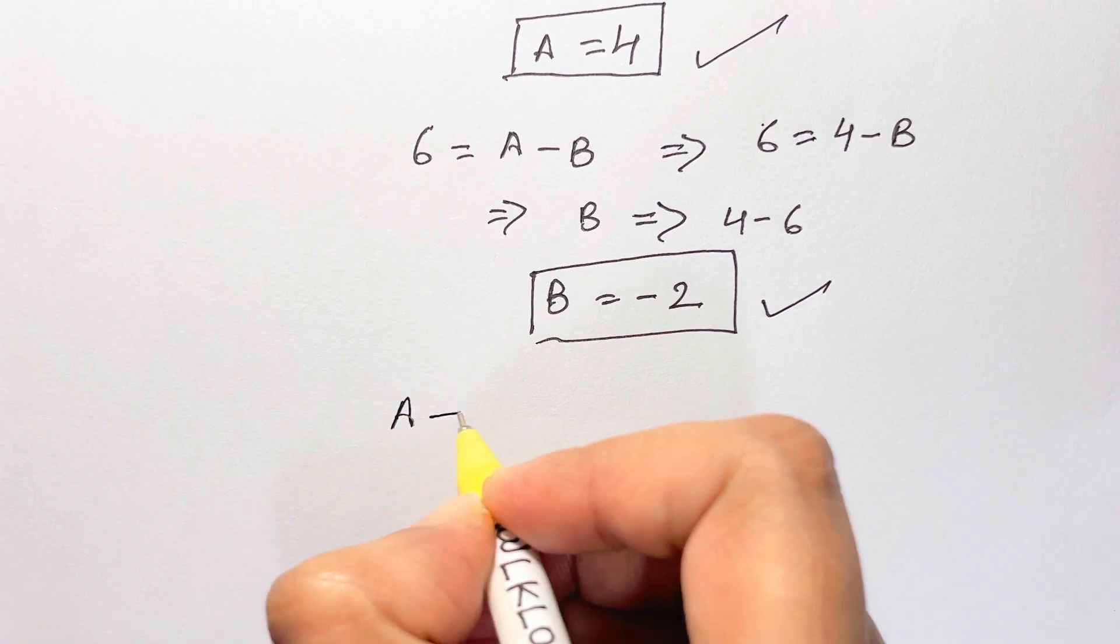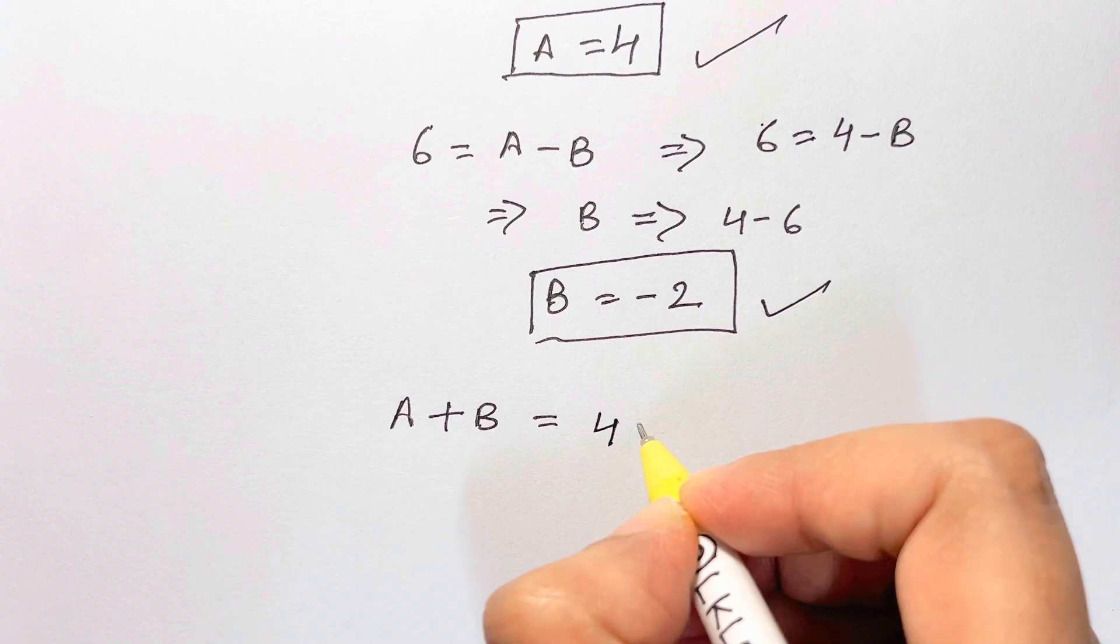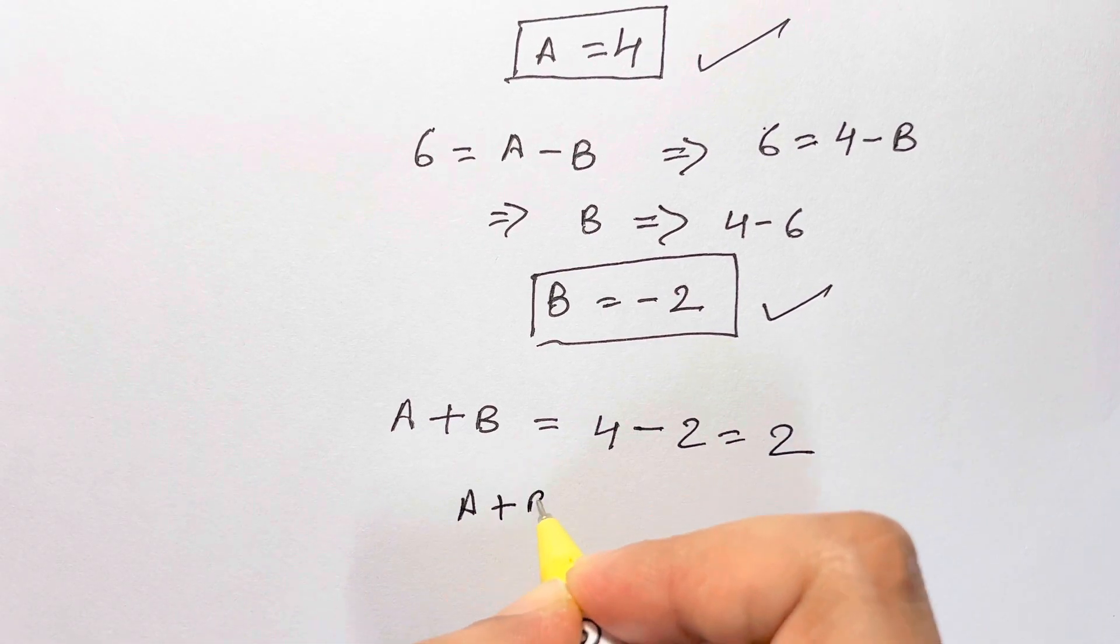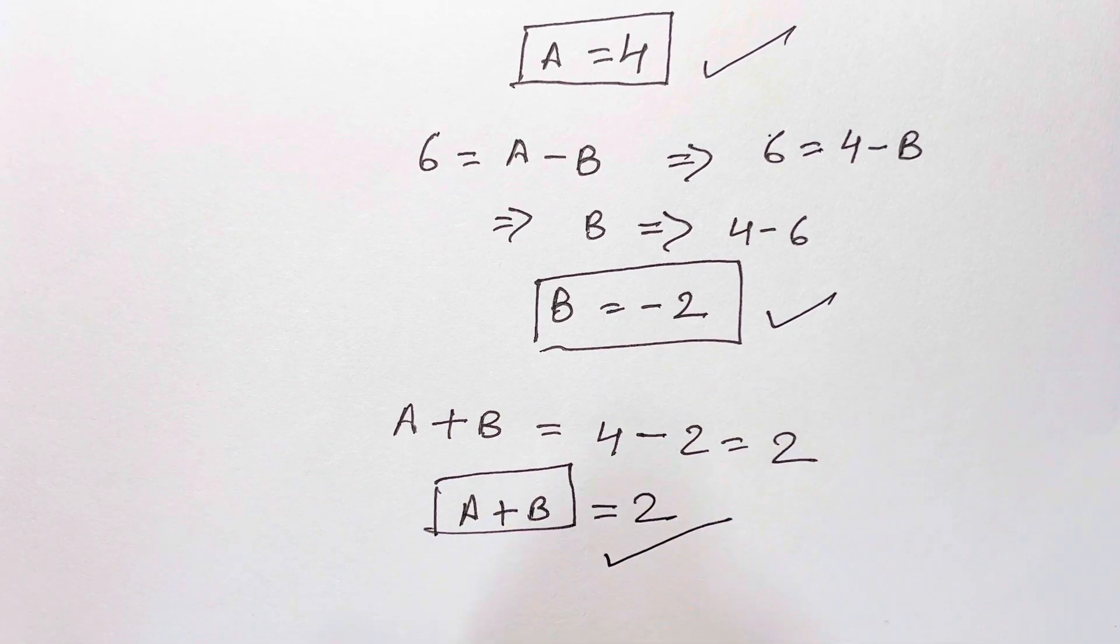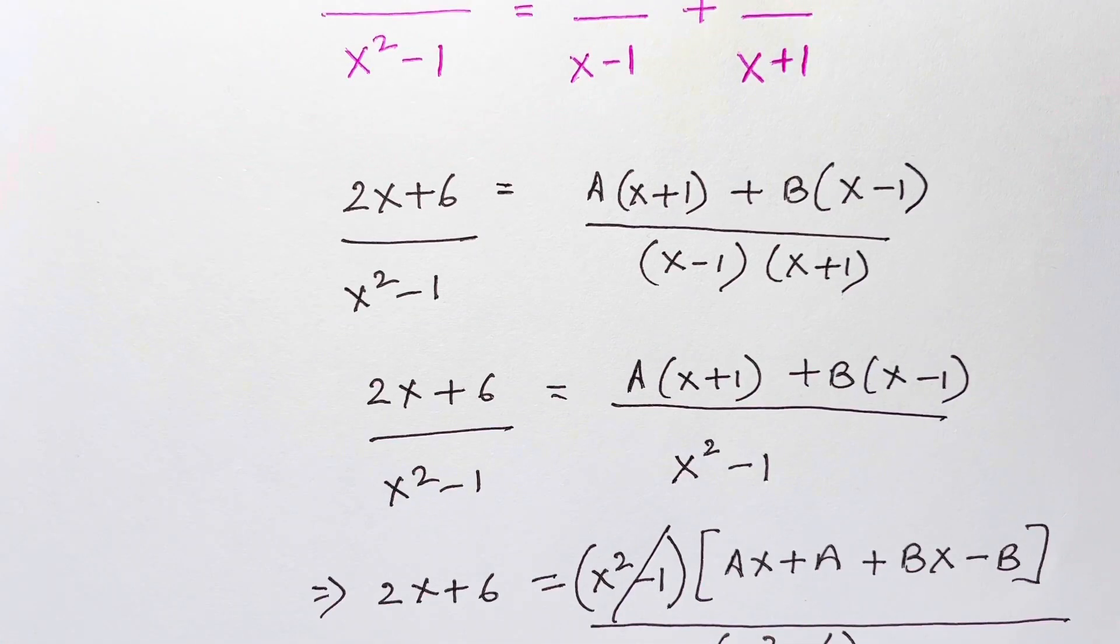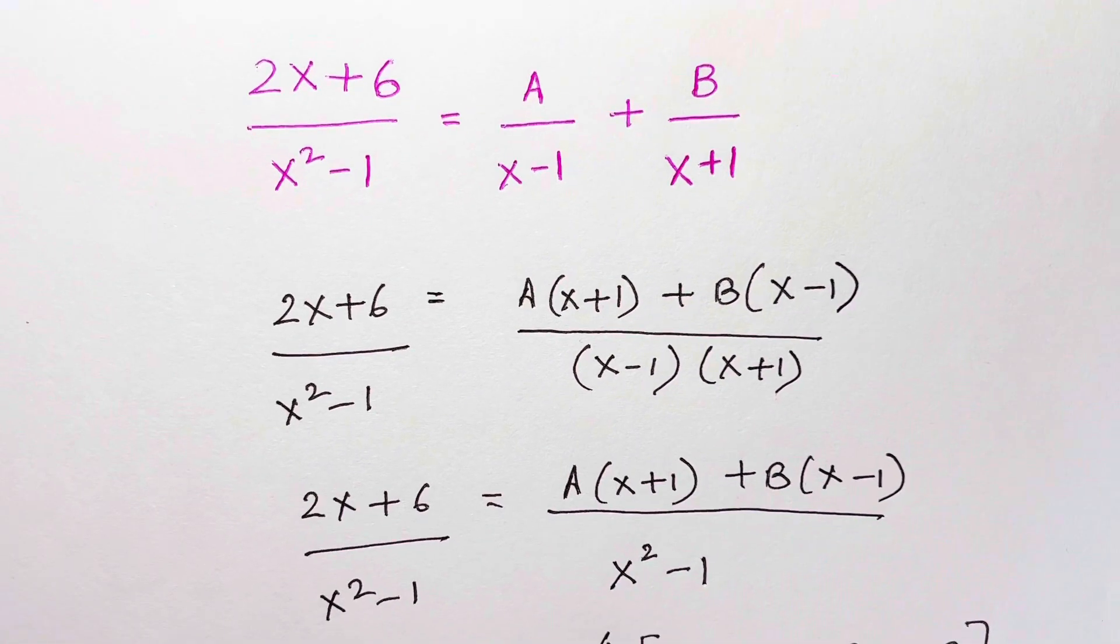That's how we get the value of A and B. Now we wanted the value of A plus B. A plus B is equal to 4 minus 2, which is equal to 2. So if we are finding out the sum of the two values, which is equal to 2, that's your answer. So thank you so much for watching. Bye, take care.